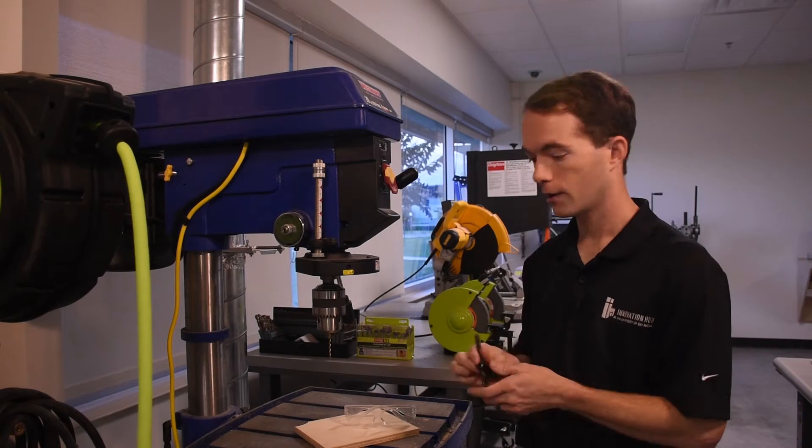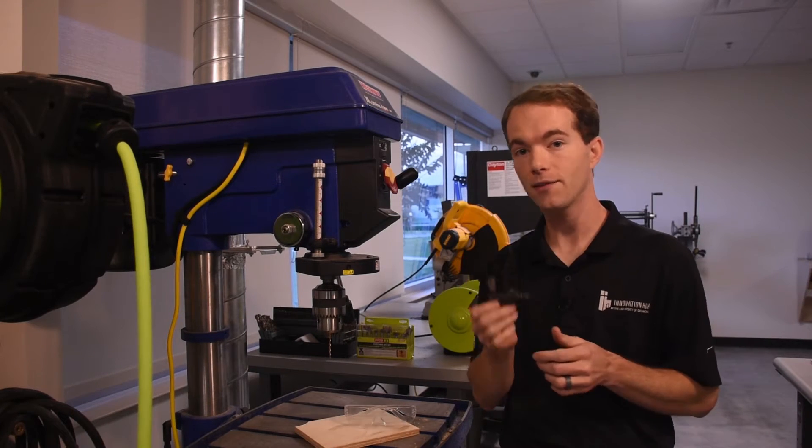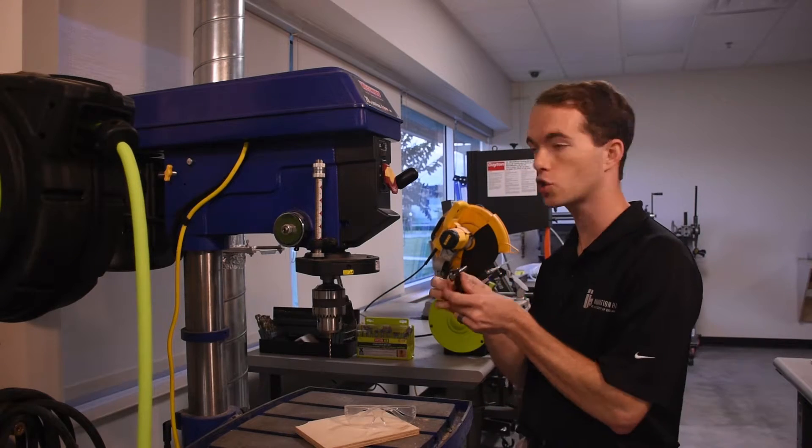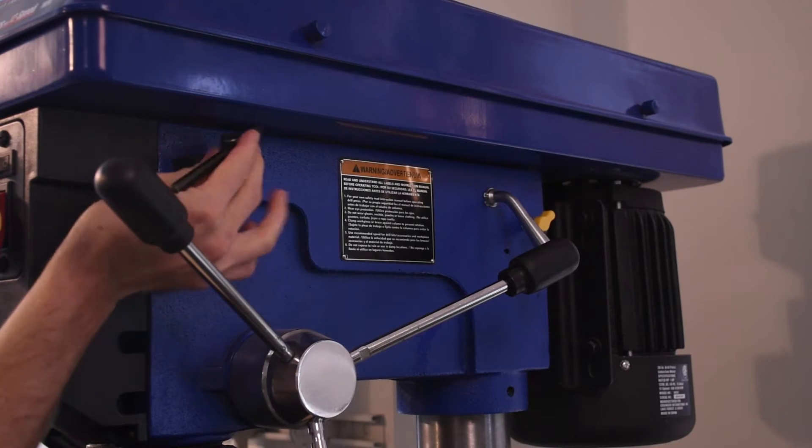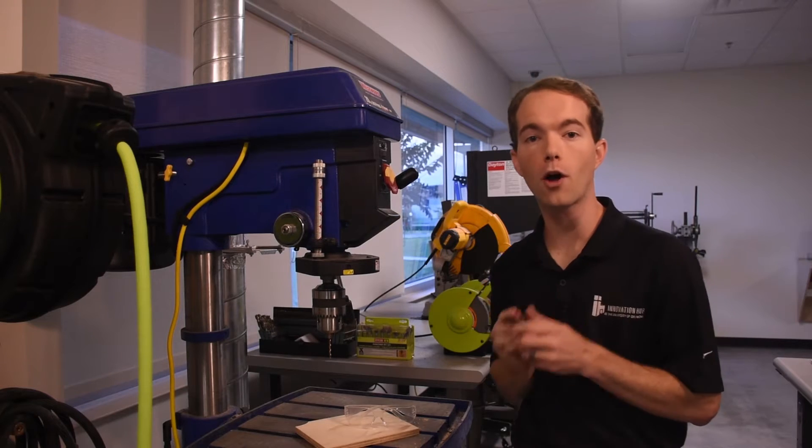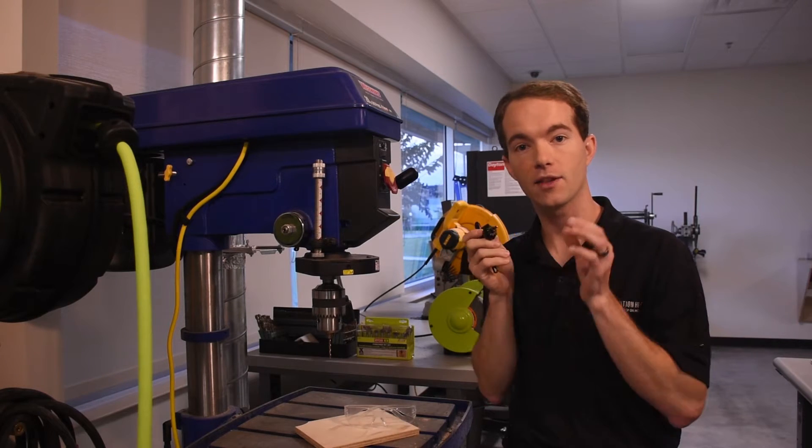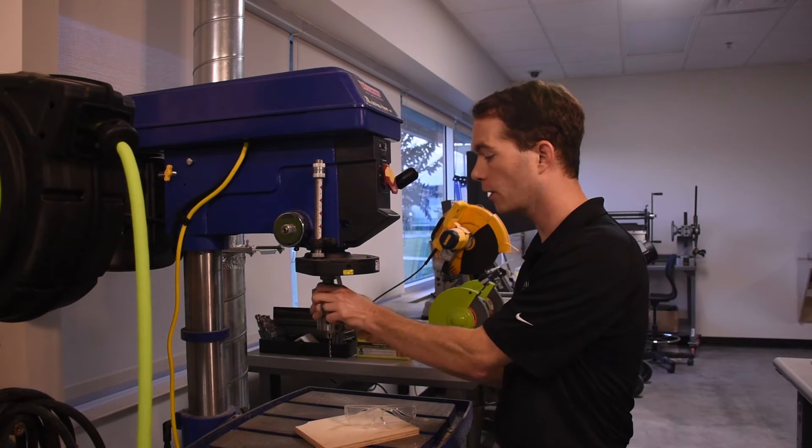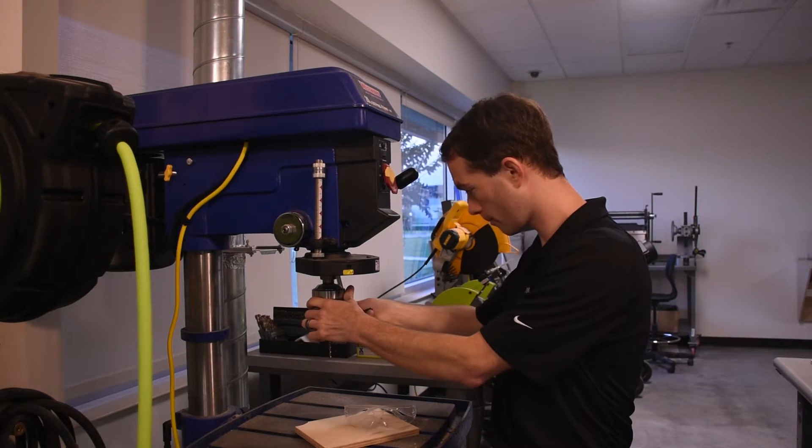One thing to note is the chuck key. You need this to get the bits in and out. It is stored alongside the frame up here just above the quill handle. Always put this thing back the second you're done using it. Because if we lose this, we can't get our bits changed anymore.